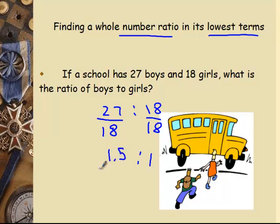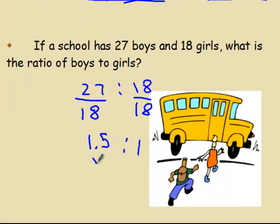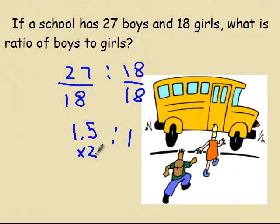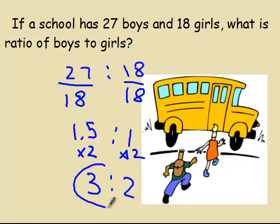So this is a 1 to 1.5 ratio, but it says whole number ratio in its lowest term. That's not a whole number. We can't just round that, because if I round this to 2, it changes the ratio. A 1 to 1.5 ratio is not the same thing as a 1 to 2 ratio. So what I do is I'm going to multiply that by 2, and whatever I do to that side, I have to do to that side to keep the ratio the same. So 1 times 2 is 2, and 1.5 times 2 is 3. So I get a 3 to 2 ratio.